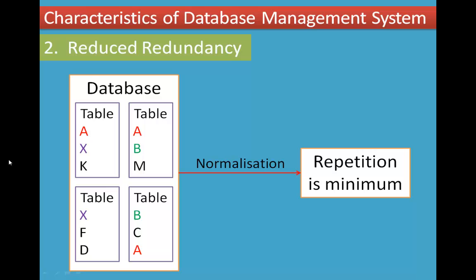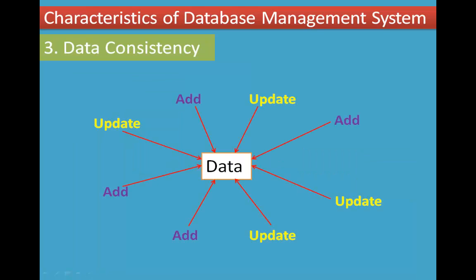Redundancy takes up hard disk space and increases the cost of storing data. If we apply normalization, we can reduce redundancy — meaning the repetition of data — and thereby reduce the cost of data storage.